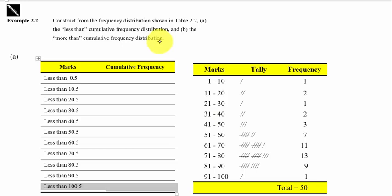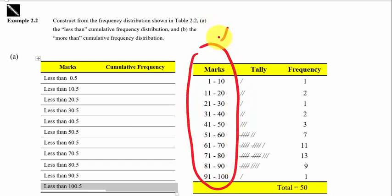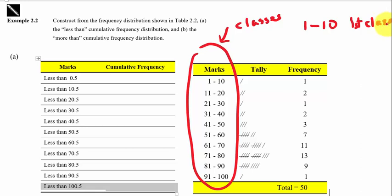We are going to compute the less than cumulative frequency distribution, which is the table on the left hand side. First, we must compute the class boundaries. These are called classes. For example, the first class is 1 to 10, the second class is 11 to 20. All together, there are 10 classes.